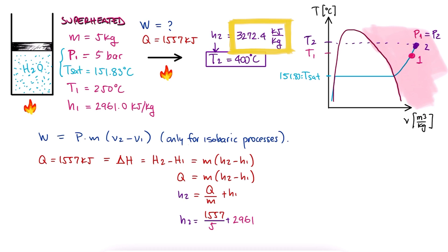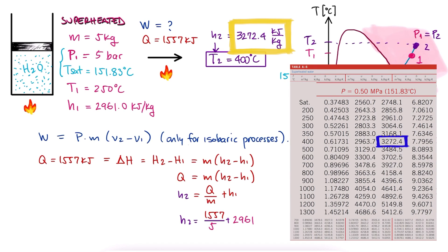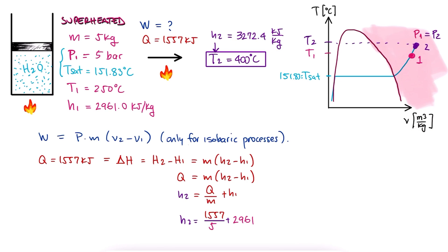Remember that if the value you find for state 2 doesn't appear exactly on these tables, you would have to interpolate. We do this in other examples, linked below.